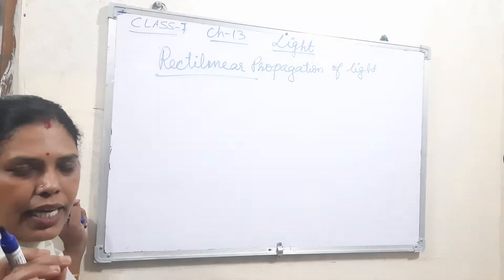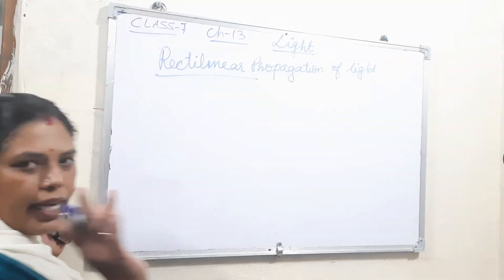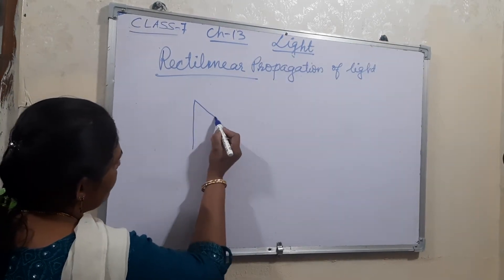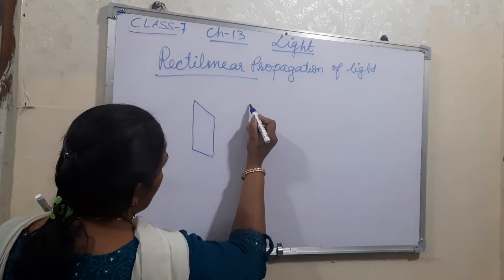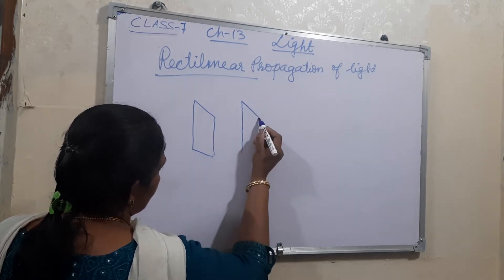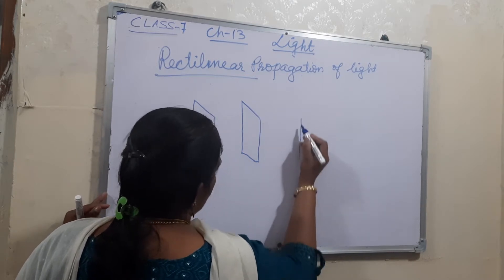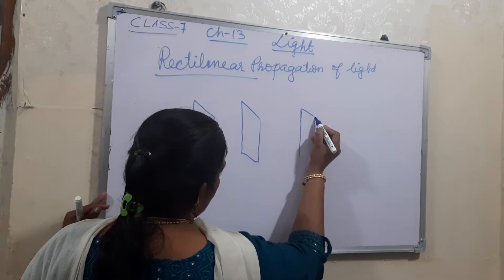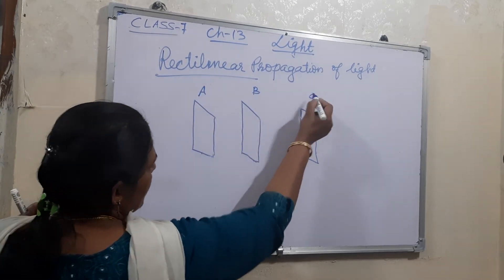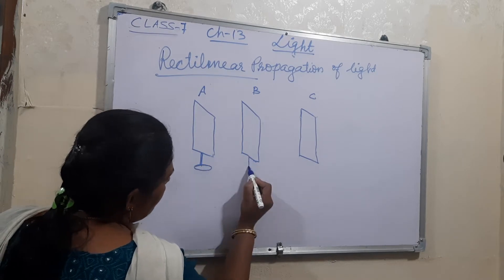There is an activity to show how the light travels in a straight line. For that, take three cardboards of the same size. Take cardboard A, cardboard B, and cardboard C — all three cardboards of the same size — and keep them at the same distance from each other.